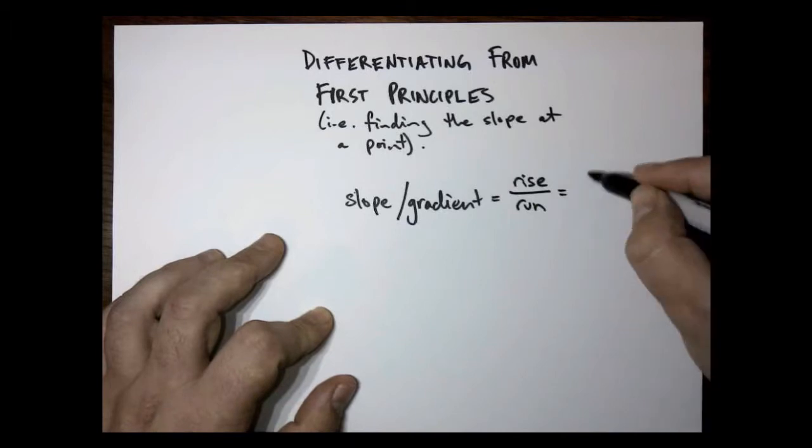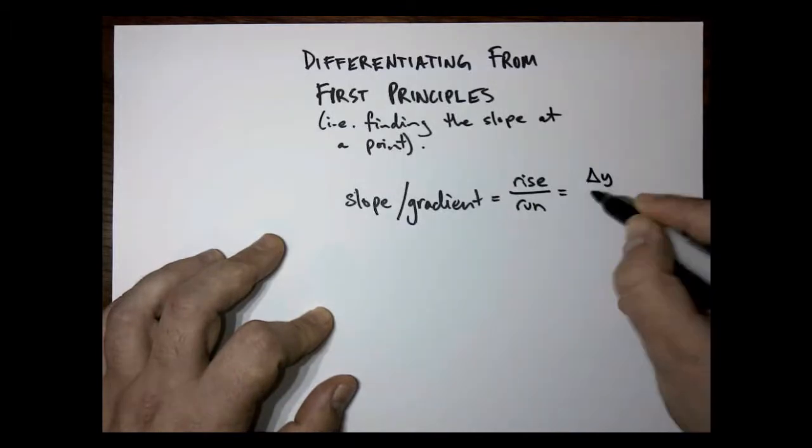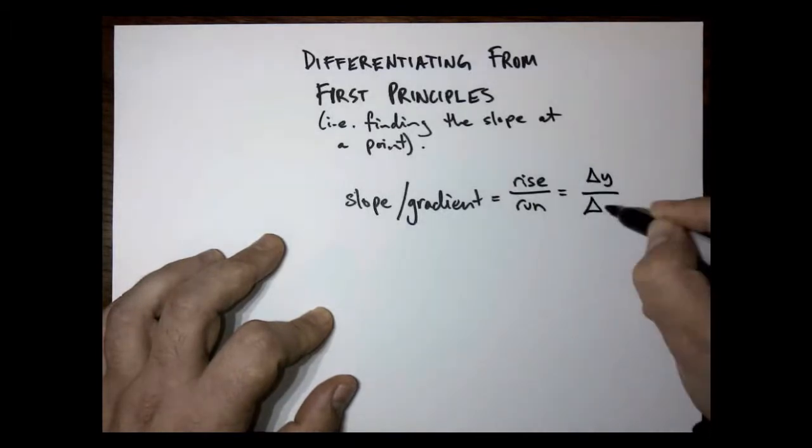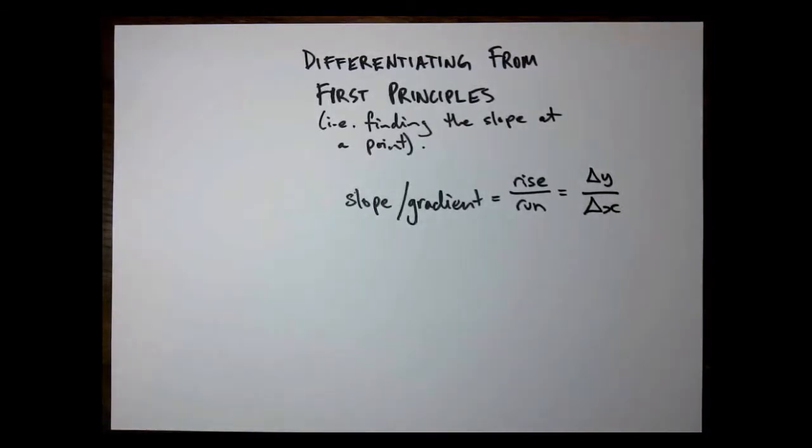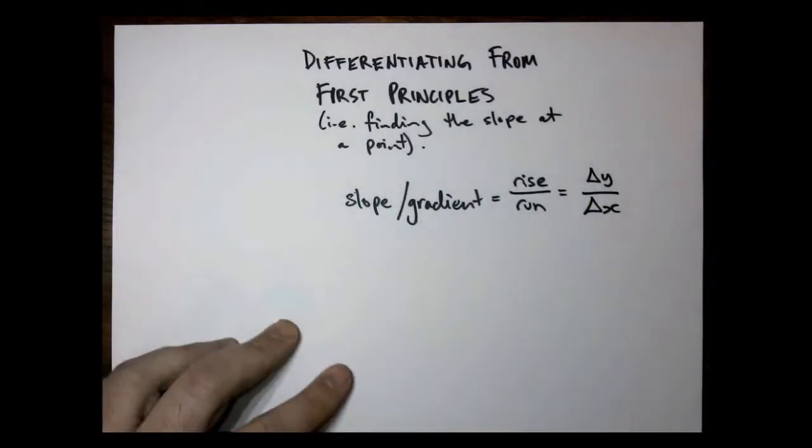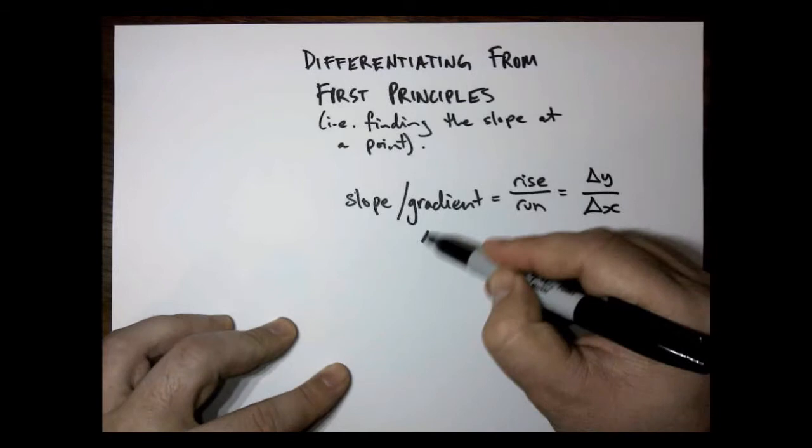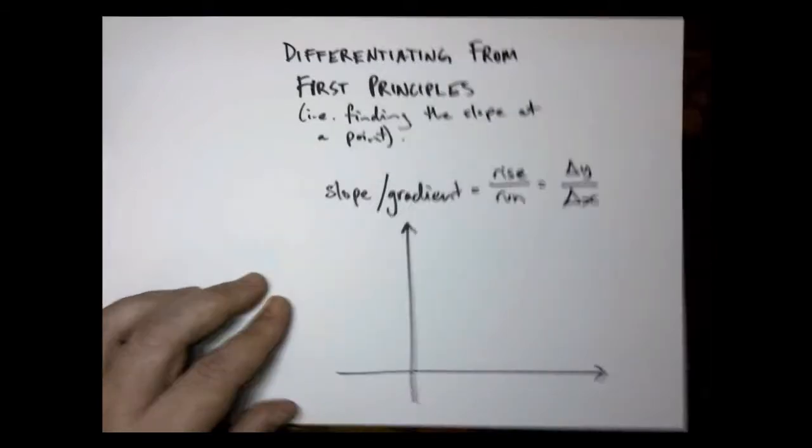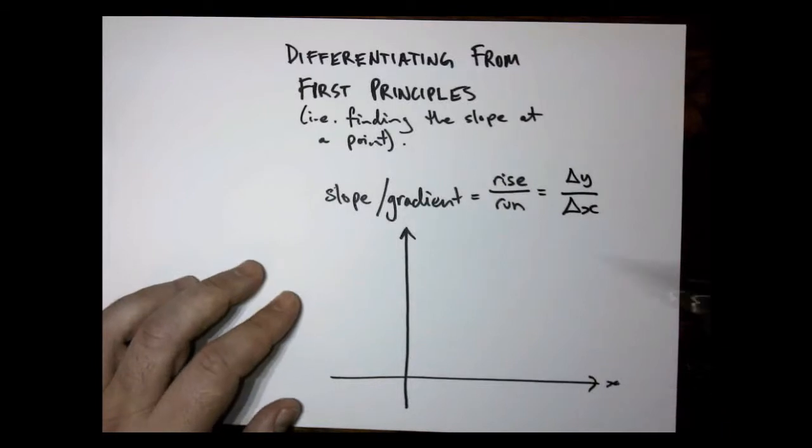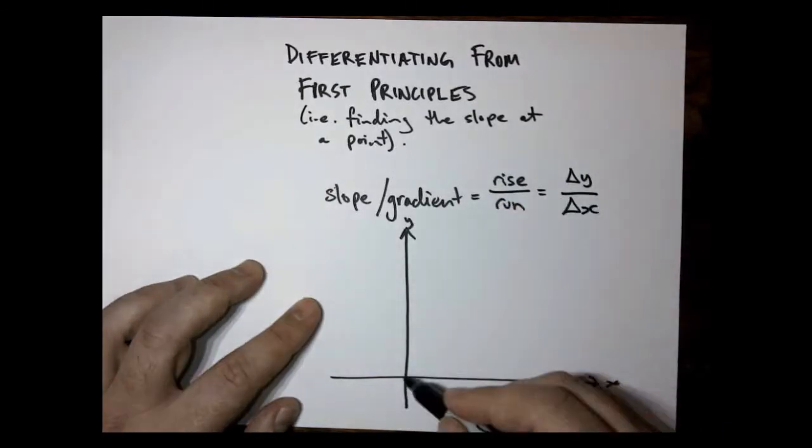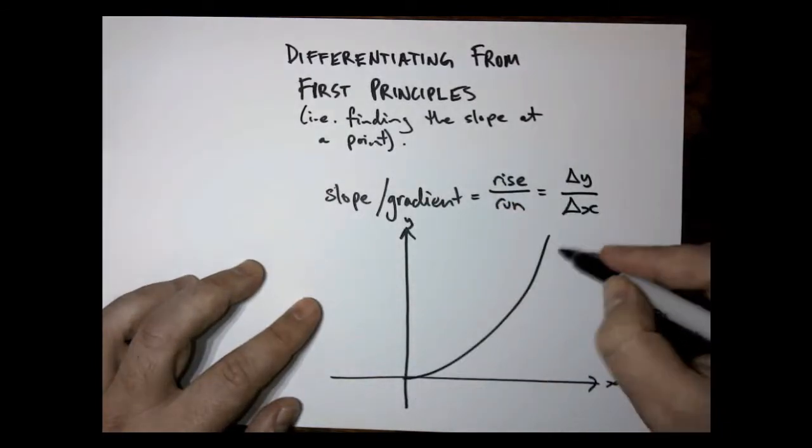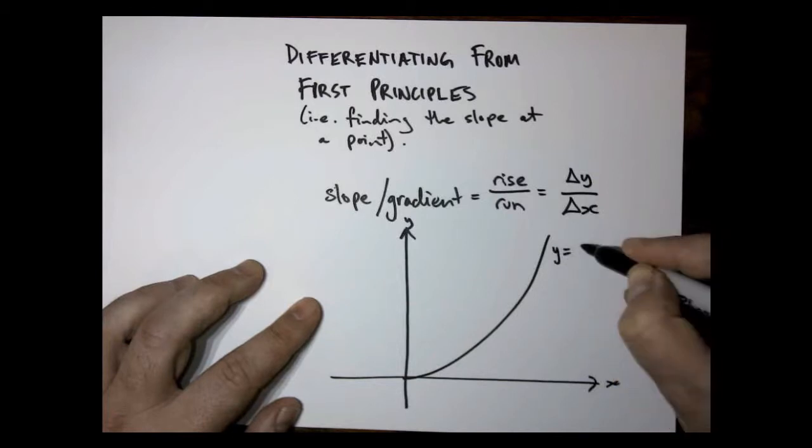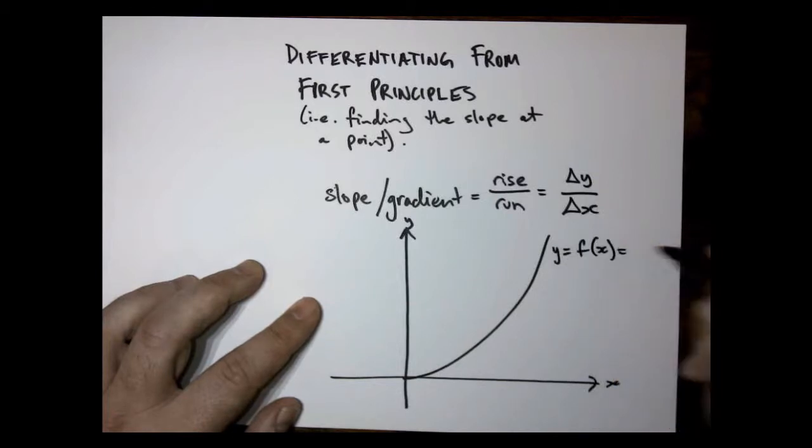We can think of this as change in y over change in x. And what we're going to do is we're going to have a look at the particular case of y here. We're going to look at this function.